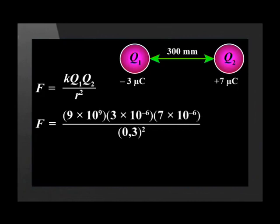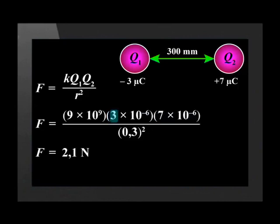Now we use Coulomb's law equation to solve for F. In the Coulomb's law equation, we substitute only the magnitude of the charges. So the force acting between the two charges is 2.1 Newtons. Note that the negative sign is left out in front of Q1. We also need to determine whether this force is attraction or repulsion. Because the two charges are oppositely charged, this is a force of attraction, since opposite charges attract.